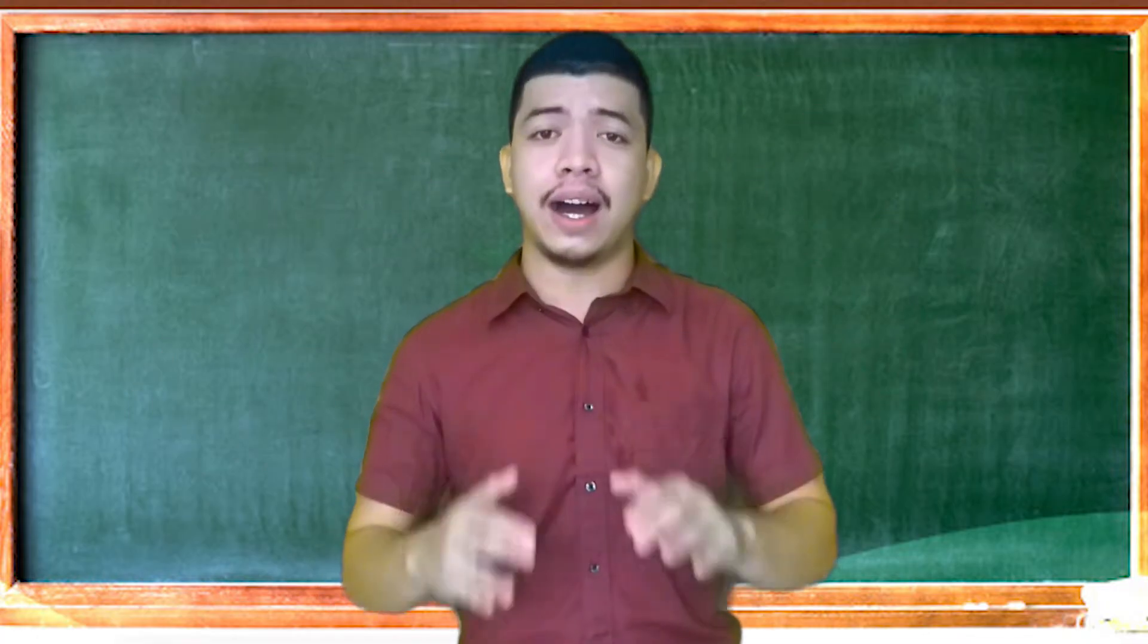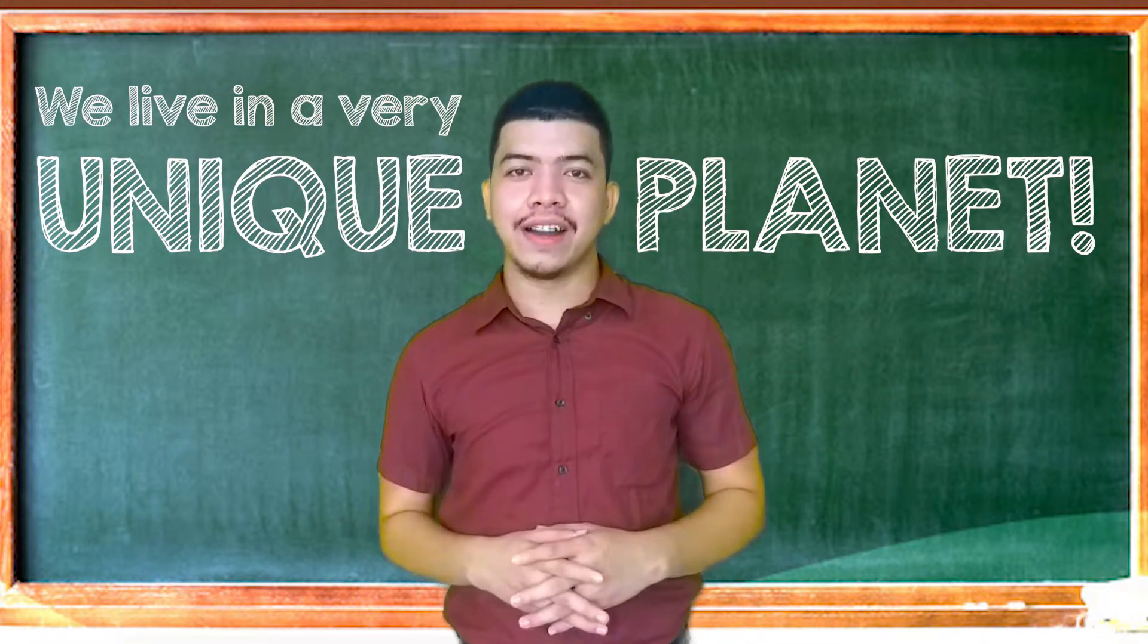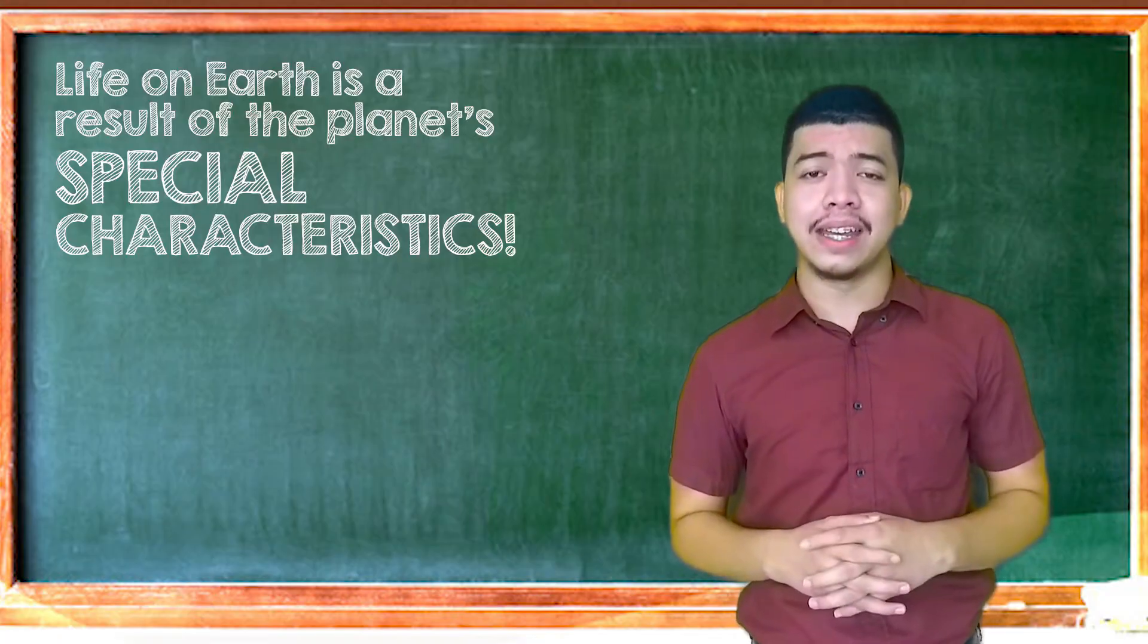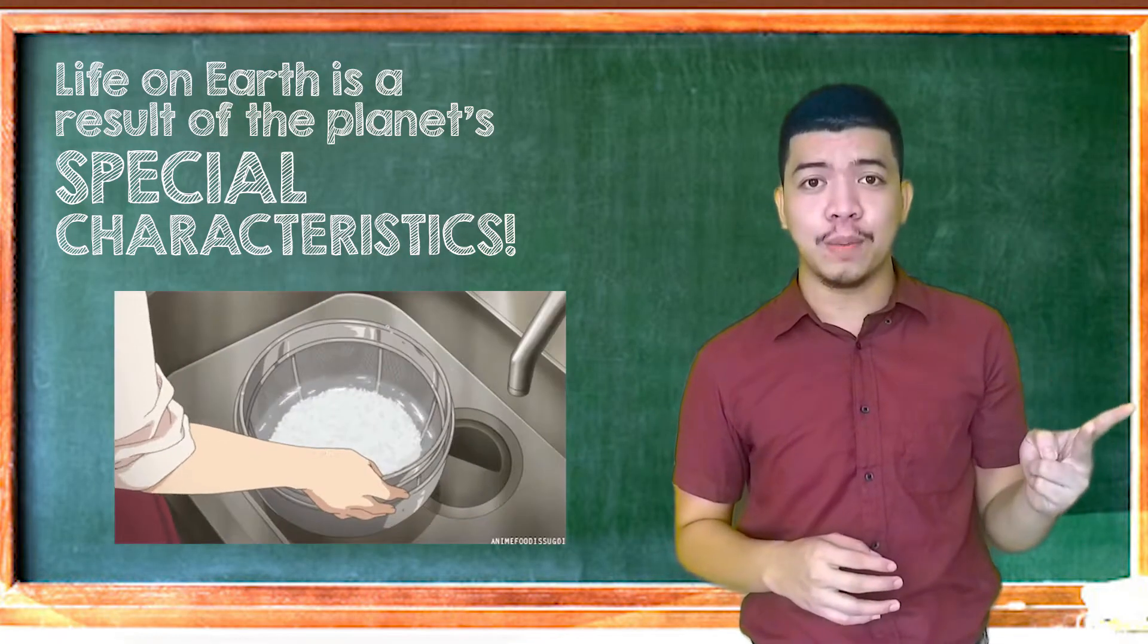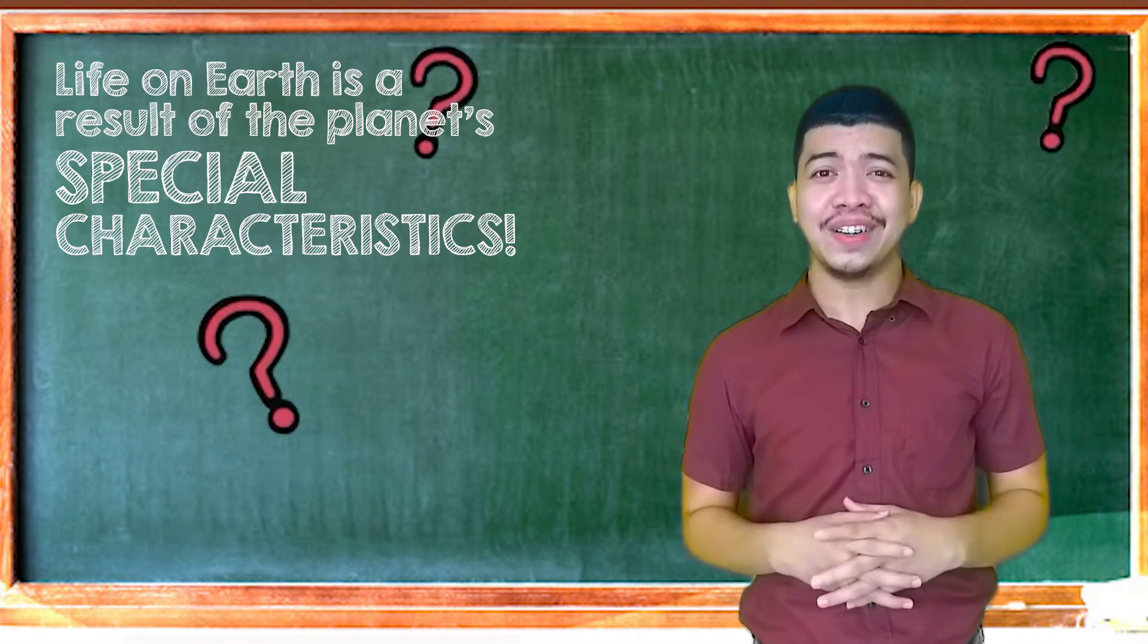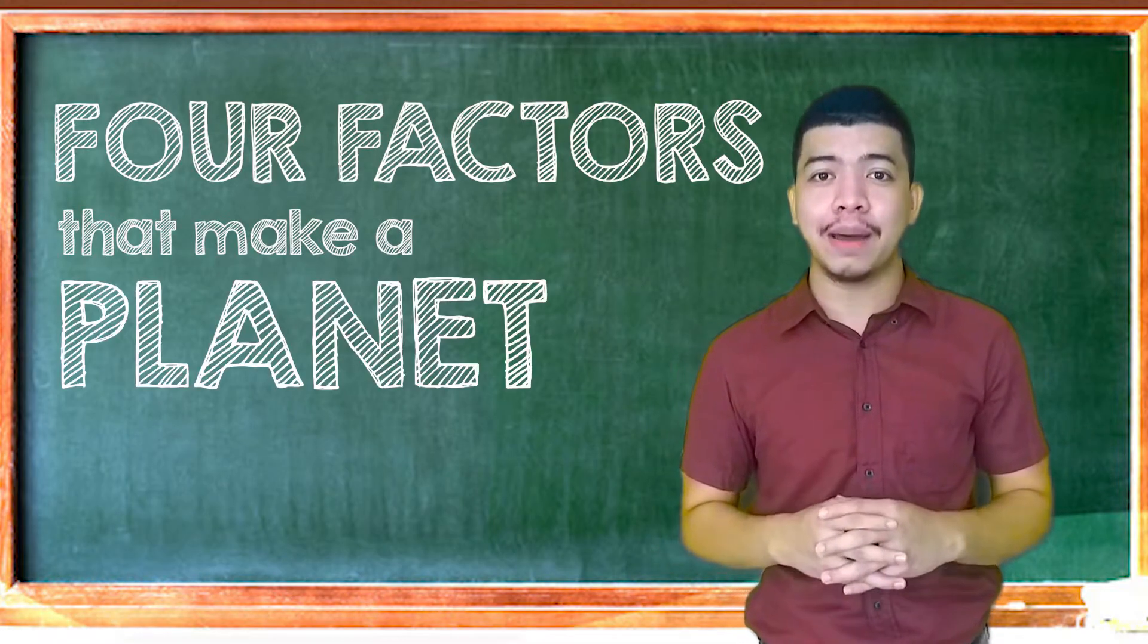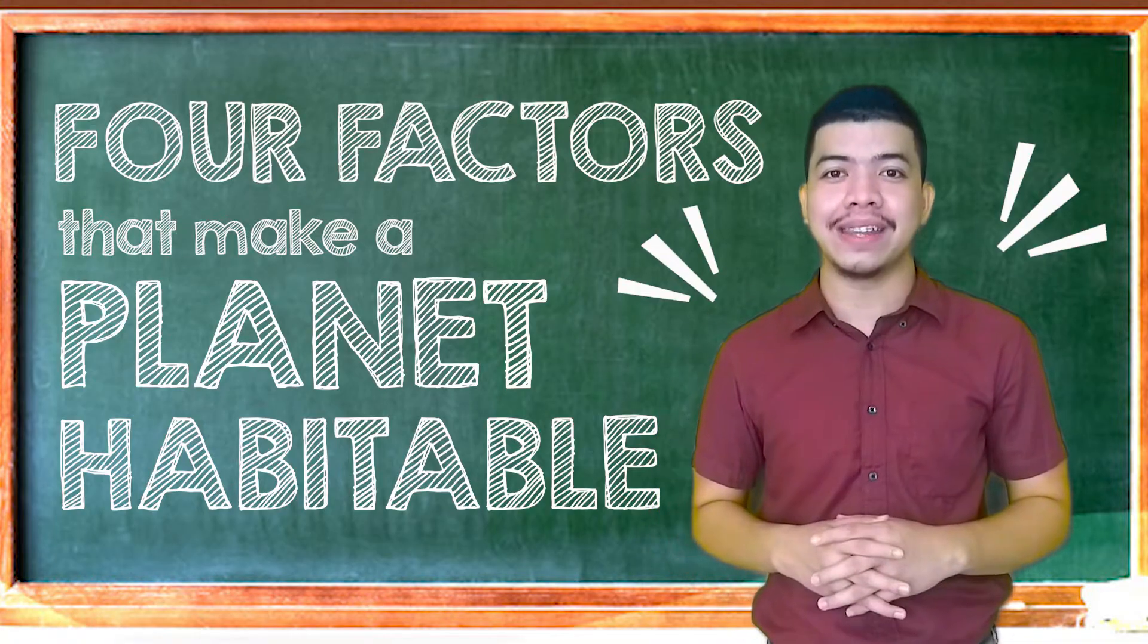So it is truly undeniable that we live in a very unique planet. However, life on Earth ay resulta lamang ng mga natatayong characteristics na taglay ng ating planeta. Kung baga sa pagsasain, kailangan mo ng tamang dami ng piras, plus tamang dami ng ubi, plus tamang damas ng apoy para magkaroon ng maayos na sinain. But before we discuss what these special characteristics are, pag-usapan muna natin ang mga factors that make a planet habitable para mas maging madali ang appreciation natin ng uniqueness of planet Earth.